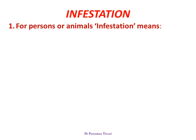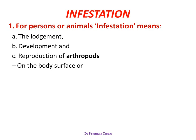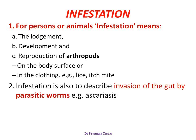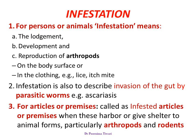Infestation, when used for persons or animals, means the lodgment, development, and reproduction of arthropods on the body surface of such a person or animal, or in the clothing. Examples are lice and itch mite, that is scabies. Infestation is also used to describe invasion of the gut by parasitic worms; for example, ascariasis is infestation by roundworms. Infested articles or premises are those which harbor or give shelter to animal forms, especially arthropods like cockroaches and mosquitoes, or rodents.